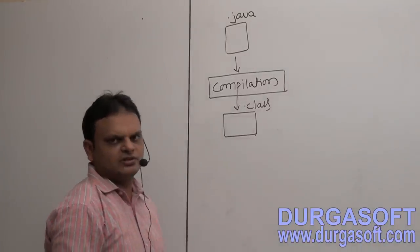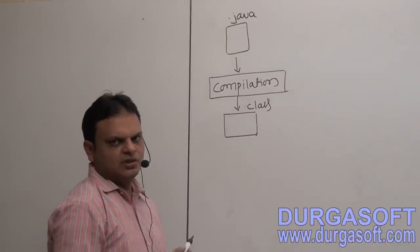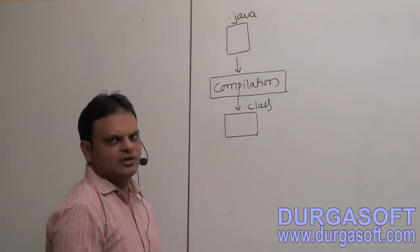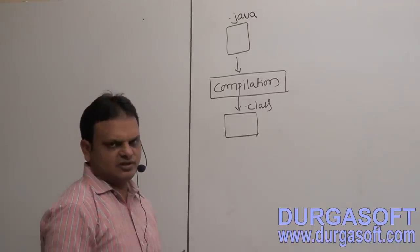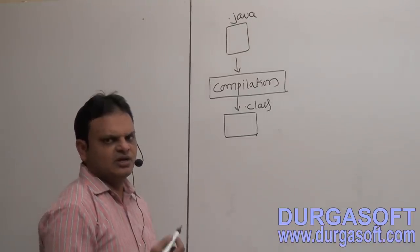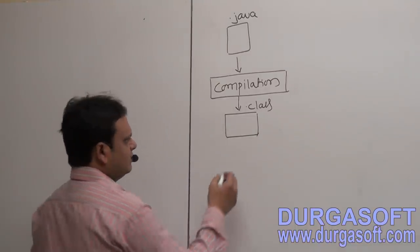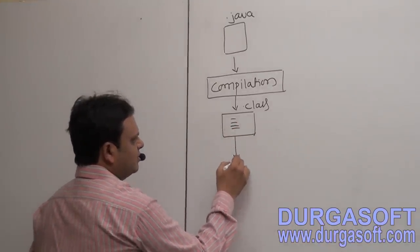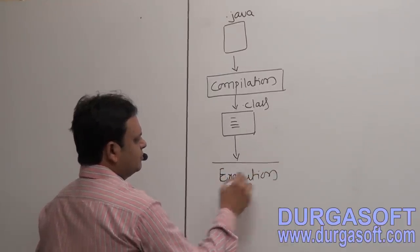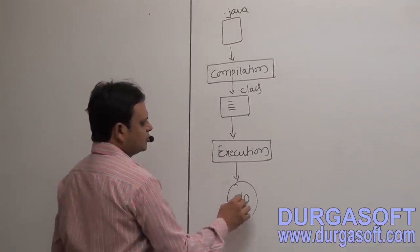Generating the number of .class files is completely depending on how many classes, abstract classes, interfaces, enums, and inner classes we have written in our Java file. For each and every class, abstract class, interface, enum, and inner class, a separate .class file will be created. When we get this .class file, we want to execute it, and we are able to get some output.